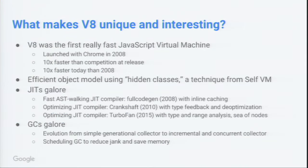V8 was the first really fast JavaScript virtual machine, developed by Lars Bak and team at Aarhus, who had experience with VMs for Self and Smalltalk and applied those techniques to JavaScript. Already at launch around 2008 with Chrome, it was 10 times faster than the competition. It was the only VM doing a JIT for JavaScript at the time, and that JIT compiler was a huge, huge improvement.